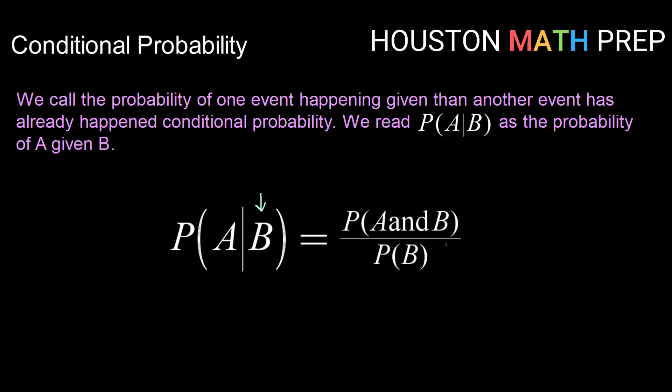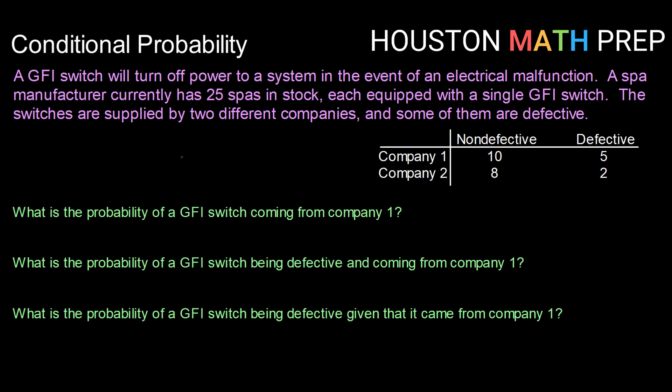So let's keep that in mind and take a look at an example. So here's our setup. A GFI switch will turn off power to a system in the event of an electrical malfunction. A spa manufacturer currently has 25 spas in stock, each equipped with a single GFI switch. The switches are supplied by two different companies, and it is known that some of them are defective.